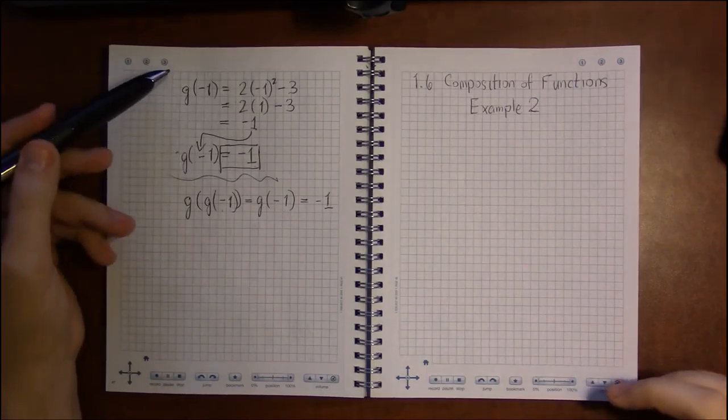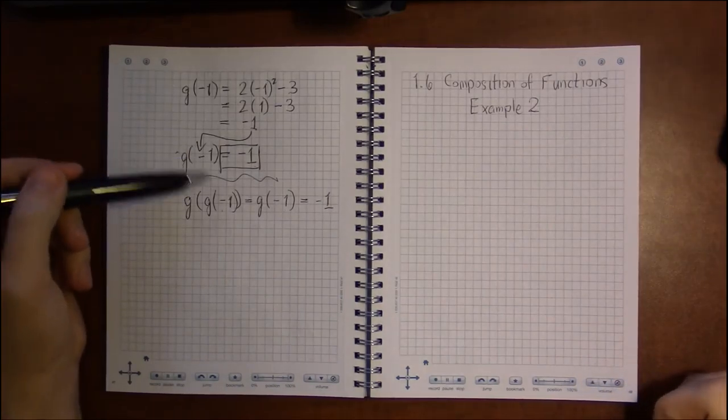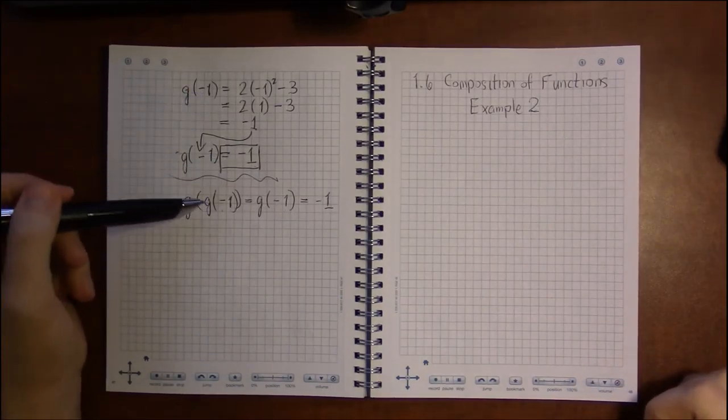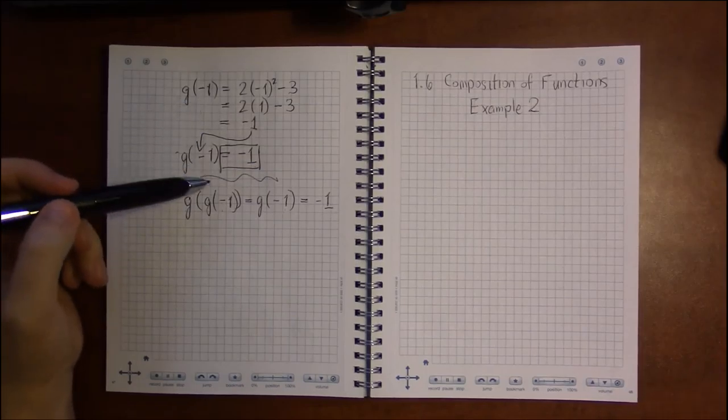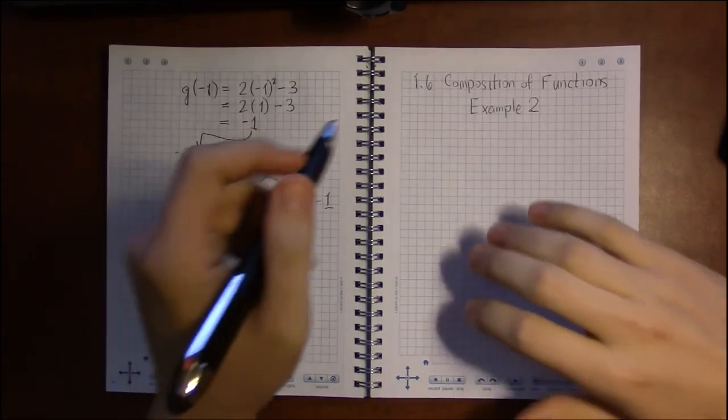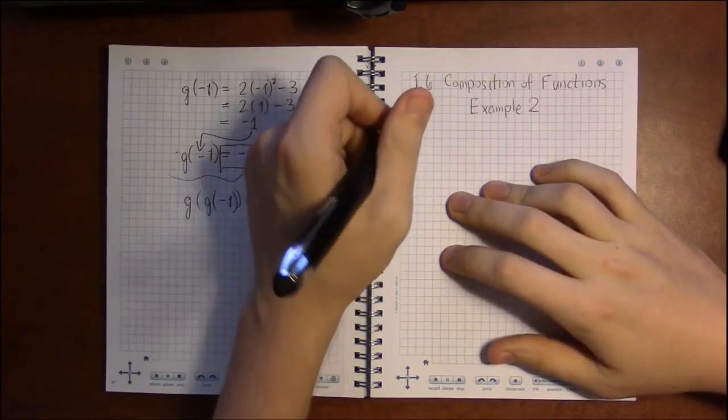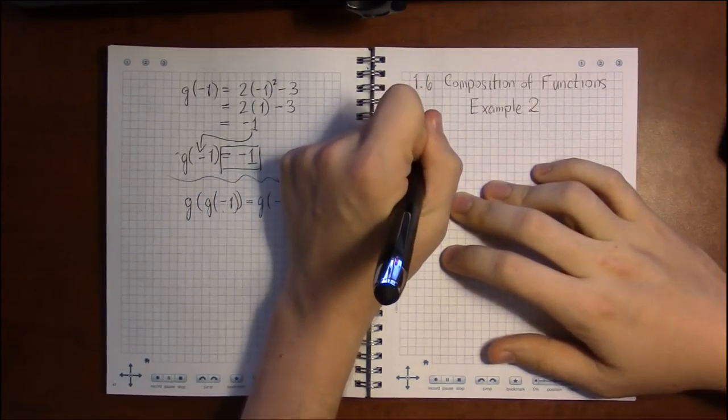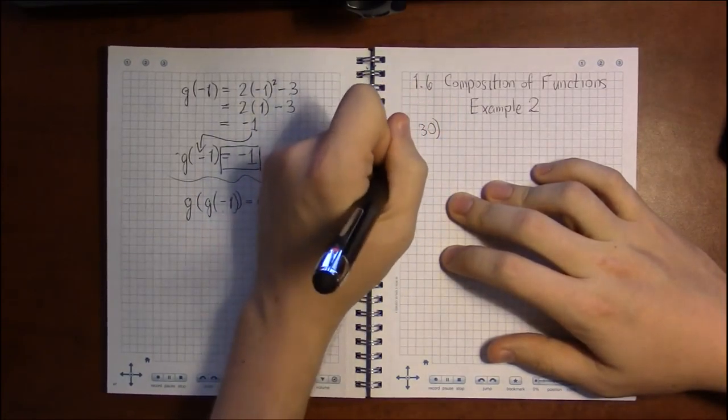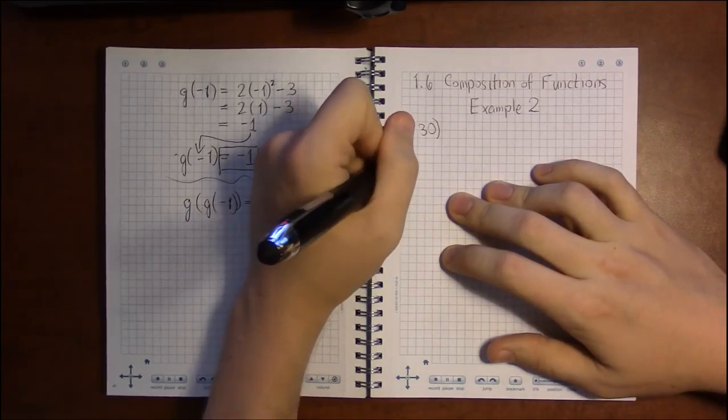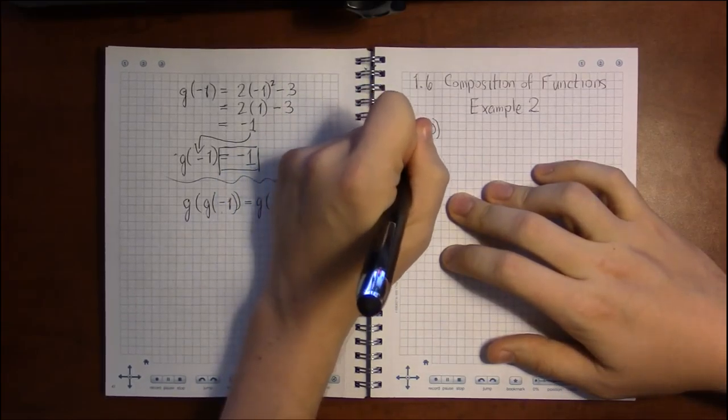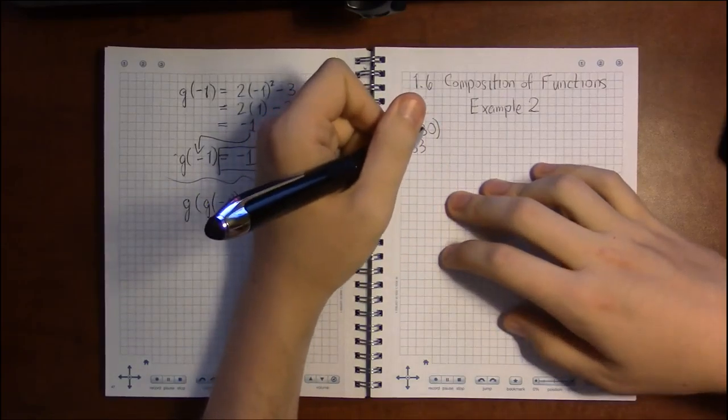Alright, so we did some of the simple composition problems, composing at various numbers and not considering domain whatsoever. But we still have to tackle these problems like 30 in section 1.6 on page 133, where we do have to consider domain.